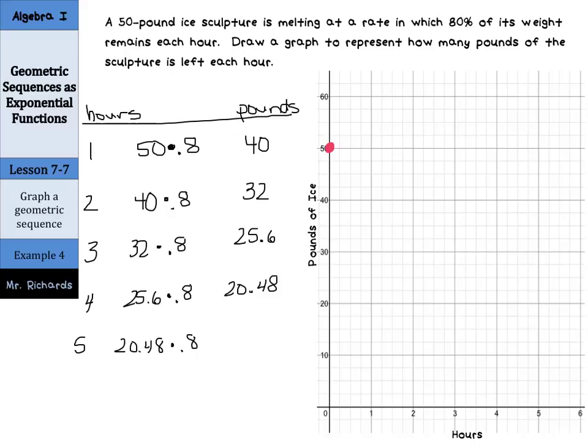For hour five, we'll take 20.48 and multiply by the common ratio of 80%, and we end up with 16.348. Lastly, our graph goes out to 6 hours, so we might as well do that one. Take 16.348, multiply it one last time by 80%, and we end up with 13.1072.